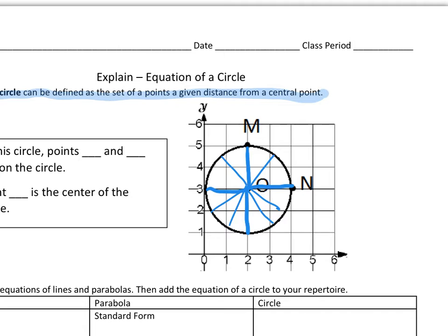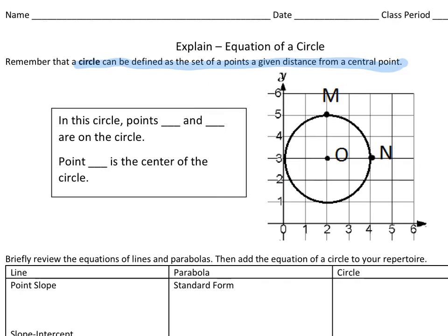All of these radiuses, all these radii, have a length of 2. While we're here, let's just fill in these blanks. In this circle, points M and N are on the circle, and point O is the center of the circle.